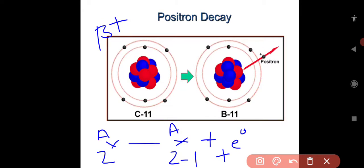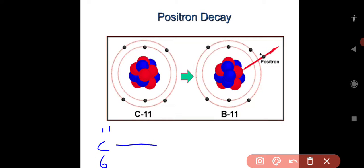Carbon-11 undergoes beta plus, that is positive charge, giving boron-11 plus one. This is the decay of positron. The stable end product is boron plus positive charge particle, that is positron. In beta plus decay, a proton is converted into neutron with the emission of positron.